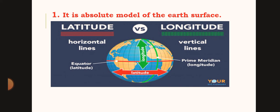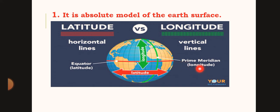Latitudes are horizontal lines. The longest latitude is called the equator. The earth is separated into west and east by the prime meridian, which serves as a reference line.